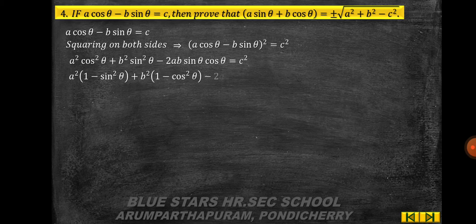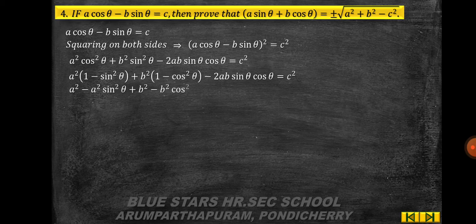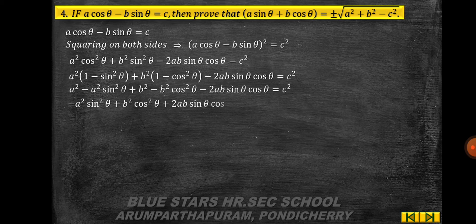Writing cos²θ = 1 − sin²θ and sin²θ = 1 − cos²θ: a²(1 − sin²θ) + b²(1 − cos²θ) − 2ab·sinθcosθ = c². Expanding: a² − a²sin²θ + b² − b²cos²θ − 2ab·sinθcosθ = c². Rearranging: a²sin²θ + b²cos²θ + 2ab·sinθcosθ = a² + b² − c².